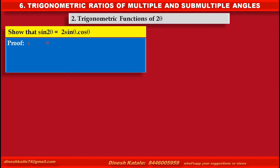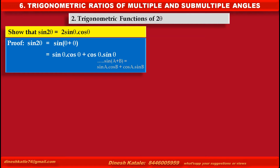Proof. We get sin 2 theta — sin 2 theta can be written as theta plus theta. By using the formula sin A plus B equals sin A into cos B plus cos A into sin B, we get sin theta into cos theta plus cos theta into sin theta. Since the values of A and B are both theta, both terms are the same, and adding them we get 2 sin theta into cos theta as the required statement.